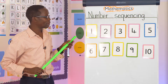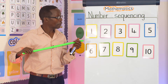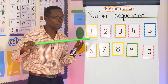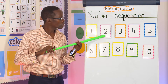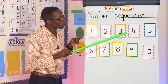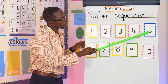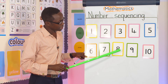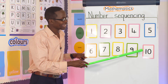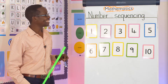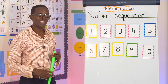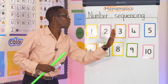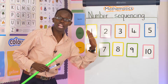Have I gotten it? Let's see whether I have fixed all the missing numbers well. One, two, three, four, five, six, seven, eight, nine, ten. Good, teacher David. That's wonderful. That is what we call number sequencing — the numbers are following each other.